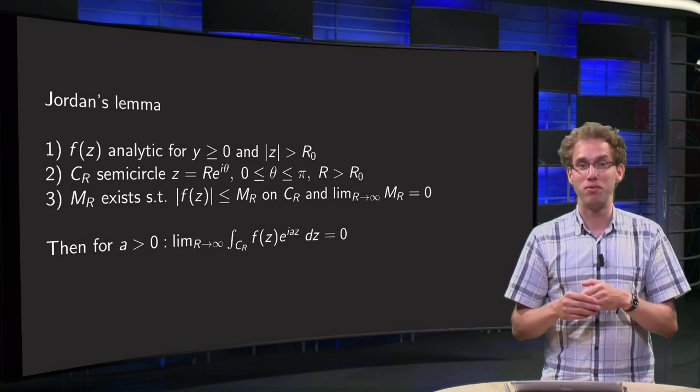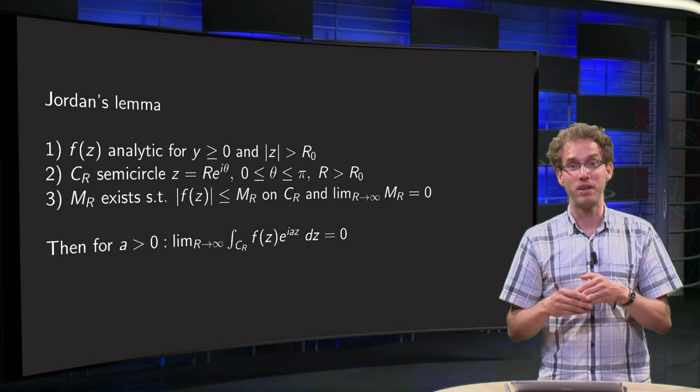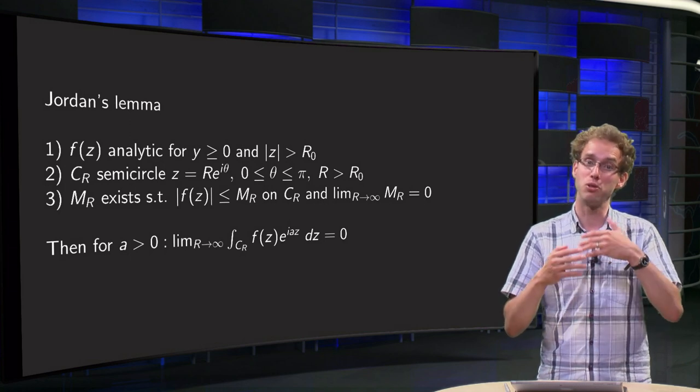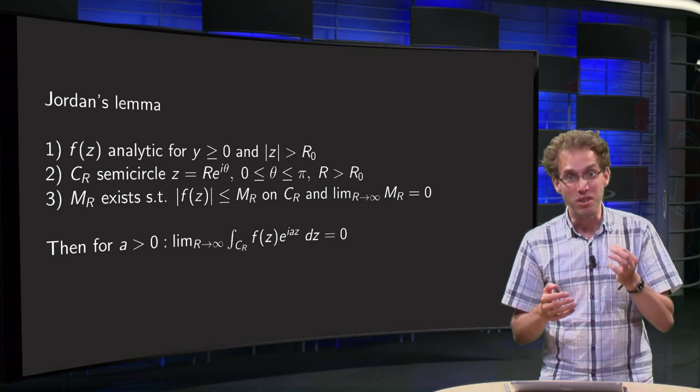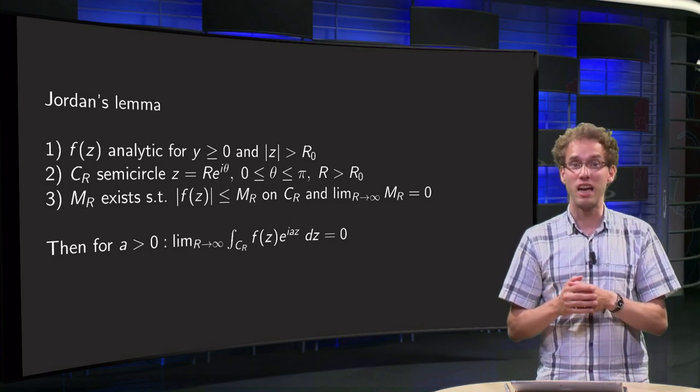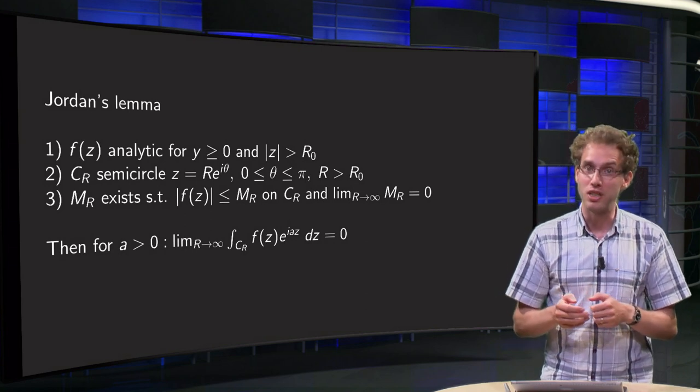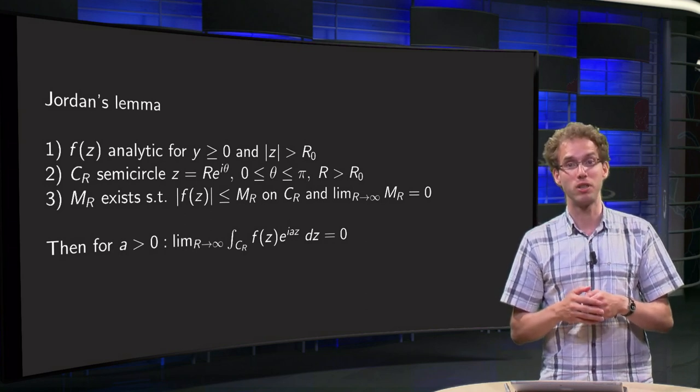But even for positive ω, we can encounter problems if f does not decay to zero fast enough, slower than 1 over r, because in those cases an ML estimate will not work. And those cases arise quite a lot in practical examples.